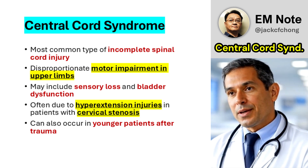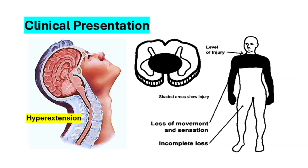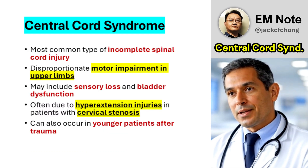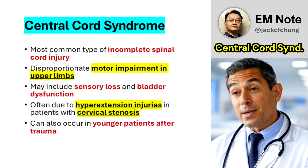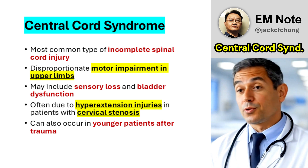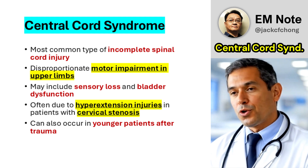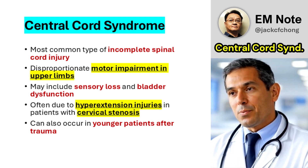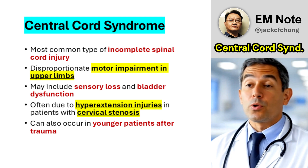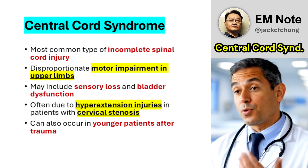Central cord syndrome is the most common form of incomplete spinal cord injury, accounting for a significant portion of spinal cord injuries. It is characterized by disproportionate upper limb motor impairment, variable sensory loss, and bladder dysfunction.